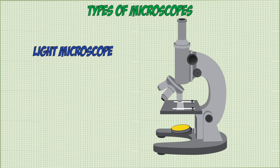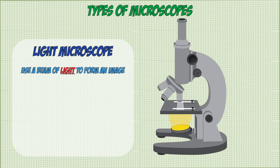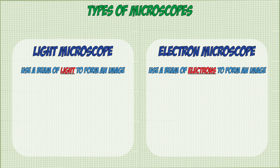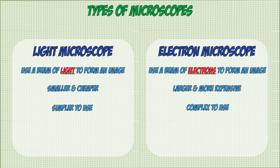Light microscopes use a beam of light to create an image, whereas electron microscopes use a beam of electrons. Light microscopes are generally much smaller and cheaper, which is why they're used in schools, while electron microscopes are much more complicated and can only really be used by scientists.